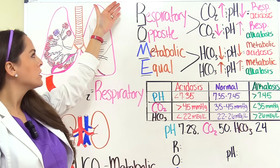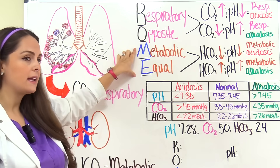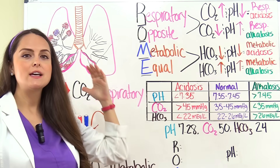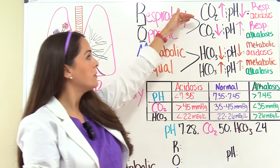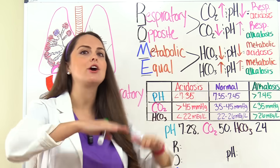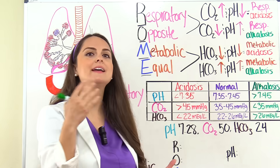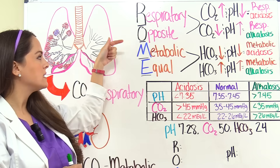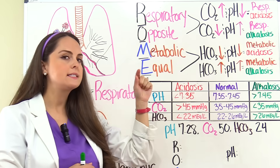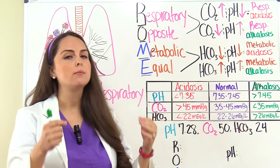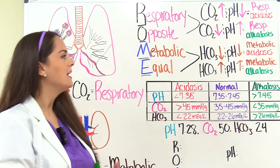Now let's look at the acronym ROME. R stands for respiratory, O for opposite, M for metabolic, and E for equal. I like to keep R and O together, and M and E together to keep the information separated. Respiratory opposite means that CO2 represents the respiratory system: when CO2 is high and blood pH is low — opposites — it's respiratory acidosis. When CO2 is low and blood pH is high — again opposites — it's respiratory alkalosis. Metabolic equal means HCO3 represents the metabolic system: when HCO3 is low and blood pH is low — both low, so equal — it's metabolic acidosis. When bicarb is high and blood pH is high — equal because both high — it's metabolic alkalosis.